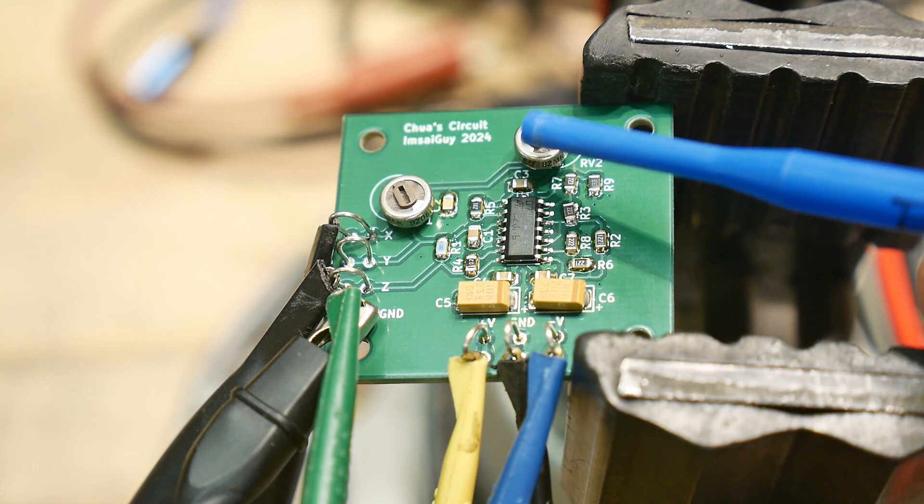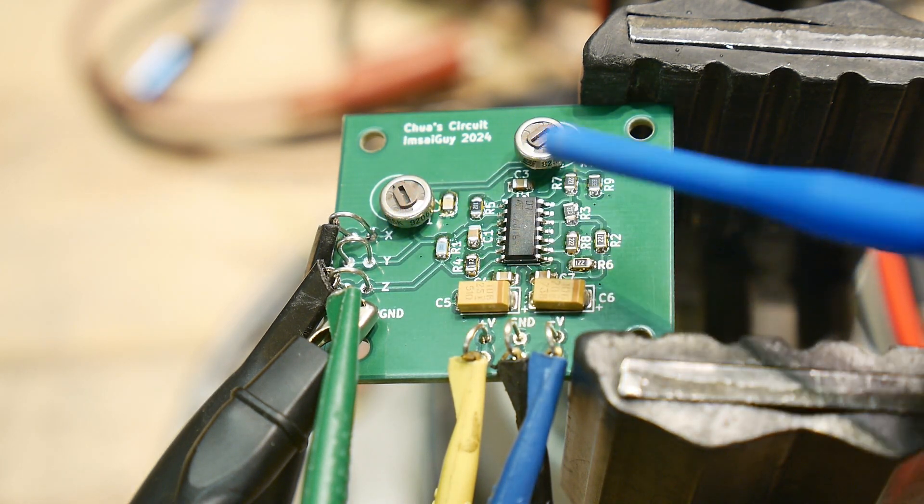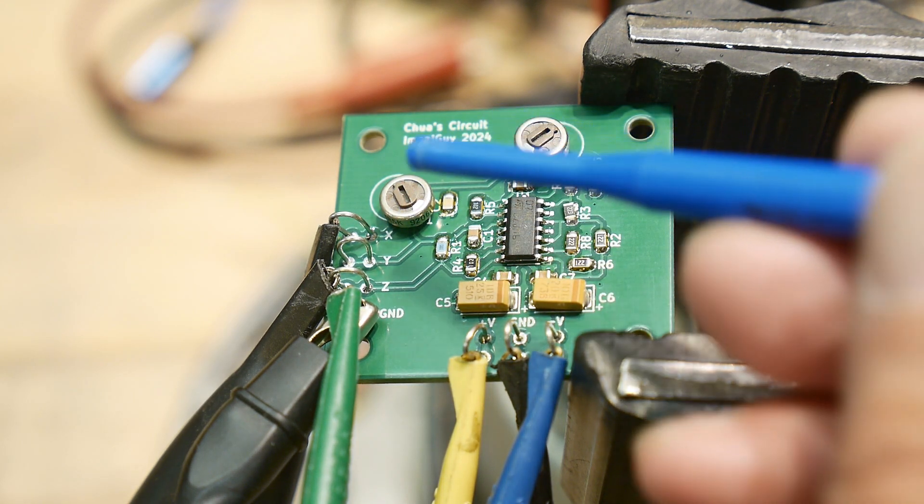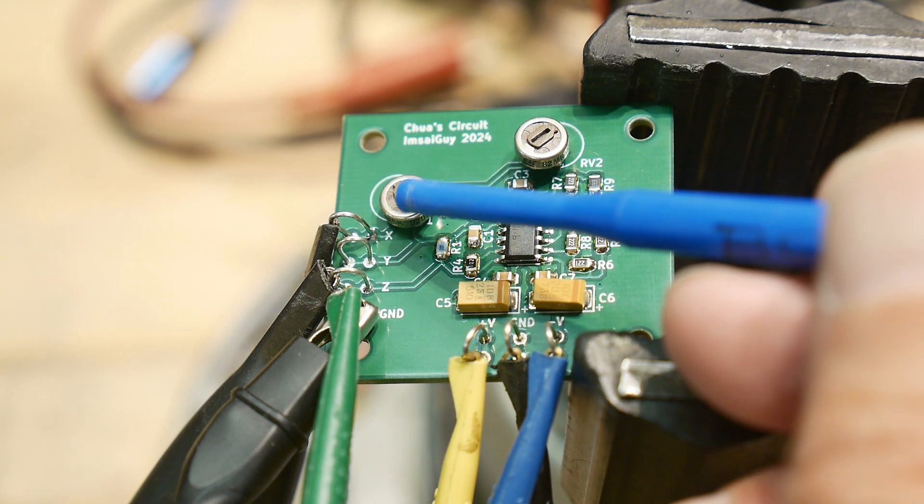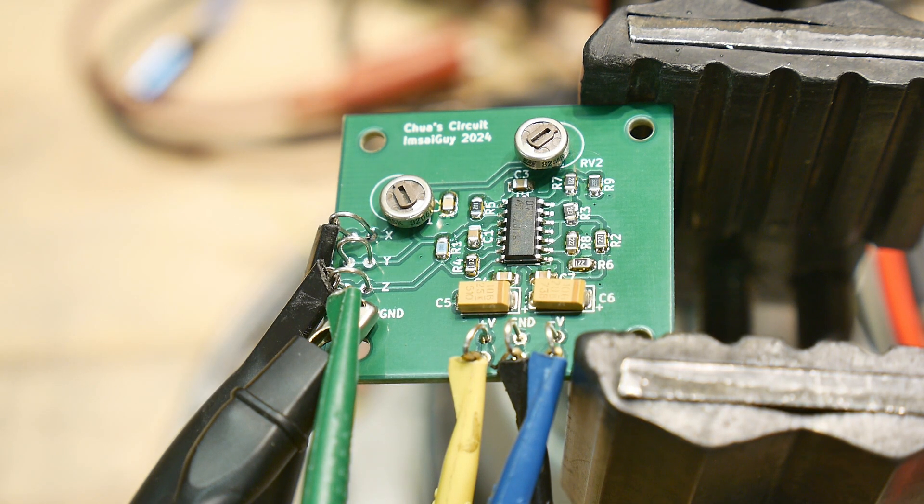I found these potentiometers, they aren't quite the right footprint, but they'll work fine. The schematic calls out 2.5K. And I had some 5Ks and so I have 5Ks in there and that works just great. No problem at all. So yeah, let's hook this thing up to the oscilloscope and see if it works.